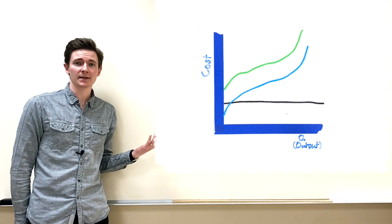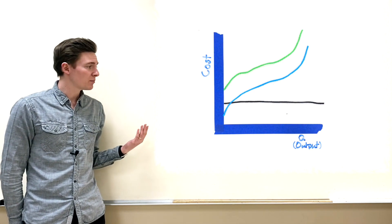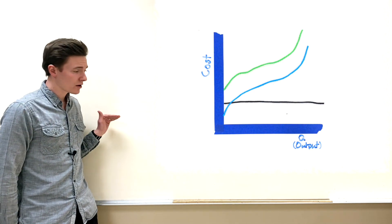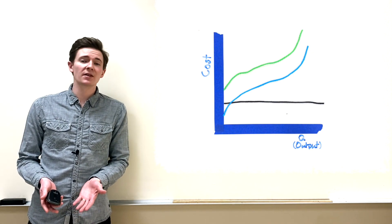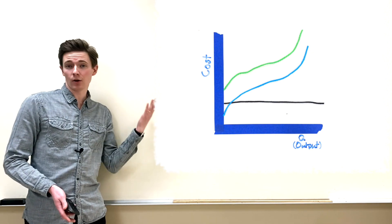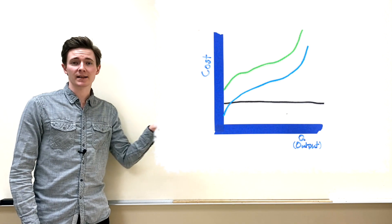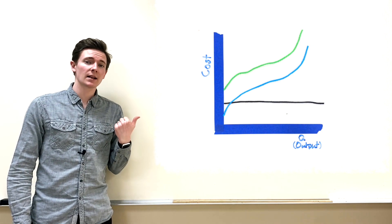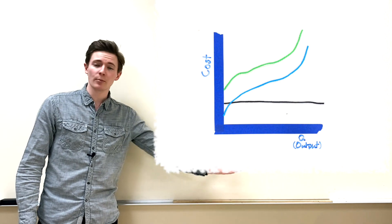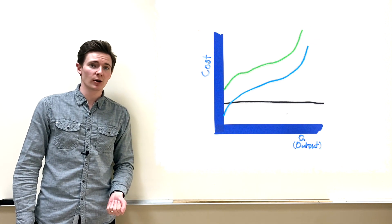Our next section covers fixed costs, variable costs, and total costs represented in a graph. The black line is straight across — costs don't change — so we call that fixed costs. The blue line changes as output changes, so we call that variable costs. Total cost is fixed costs plus variable costs.